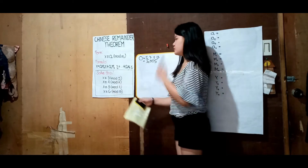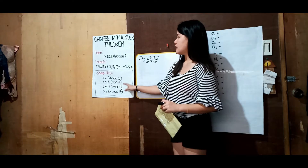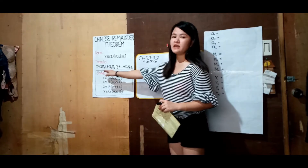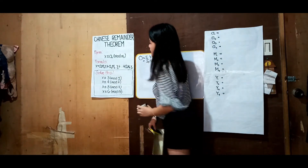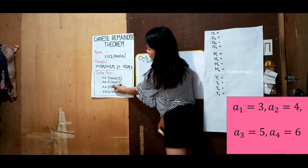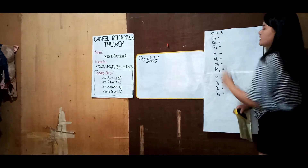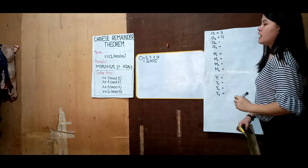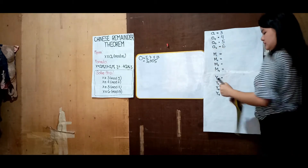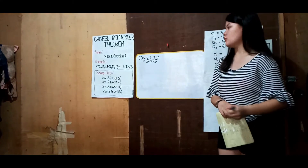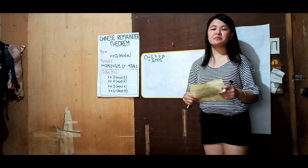Going back to our equations, you can already see that the values of a's are given. From the form, the a's are 3, 4, 5, and 6. We have a₁ = 3, a₂ = 4, a₃ = 5, and a₄ = 6. We are now only left to solve for the values of our M's and Y's.